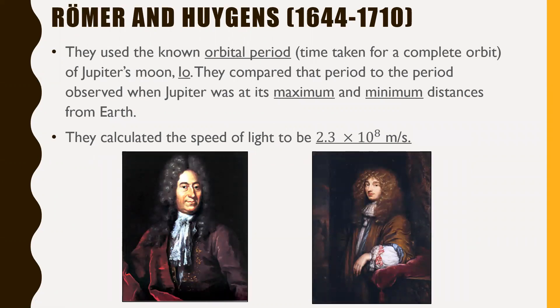Römer and Huygens lived between 1644 and 1710. They used the known orbital period, which is the time taken for a complete orbit of Jupiter's moon Io. They compared that period to the period observed when Jupiter was at its maximum and minimum distances from Earth. In other words, when Jupiter was at its furthest distance away from Earth, they watched Io through a telescope and watched how long it took Io to complete a period, a complete orbit around Jupiter. And then they waited for when Jupiter was at its minimum distance from Earth, so its closest point to Earth, and then they did the same thing. Through this, they noticed there was a difference in time, at least relative to what we were seeing. And they calculated the speed of light this way to be 2.3 times 10^8 meters per second, which is relatively close. I mean yes, they're off by quite a lot, but at least it was a good beginning estimation of what the speed of light would be. And you have to keep in mind this was over 300 years ago.